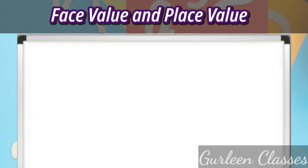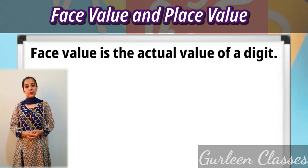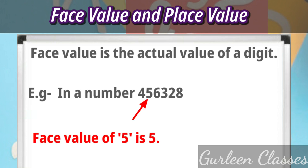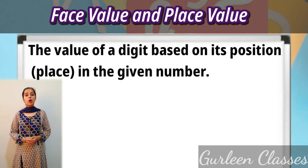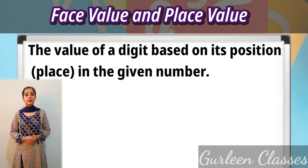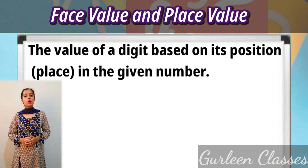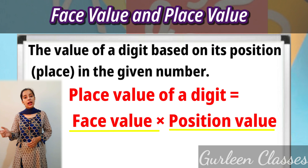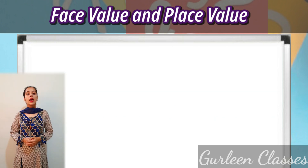Face value is the actual value of a digit. For example, in the number given, the face value of 5 is 5. Place value is the value of a digit based on its position or place in the given number. Place value of a digit is equal to face value multiplied by position value. An example is shown on screen.